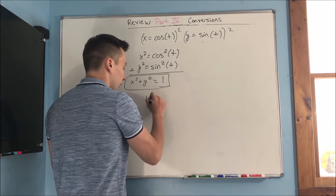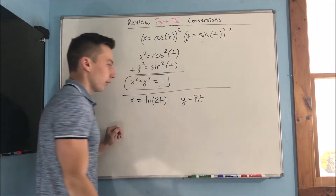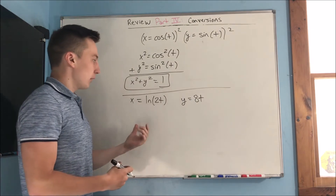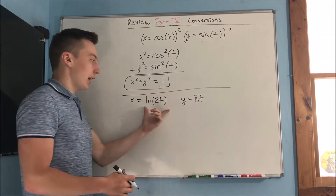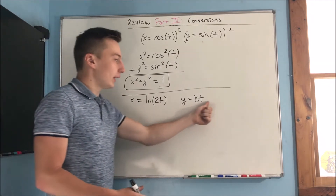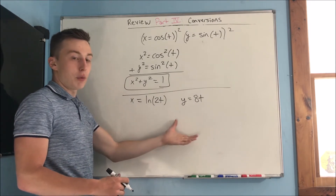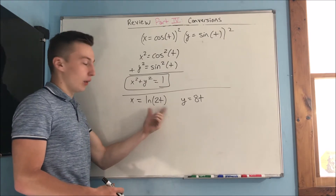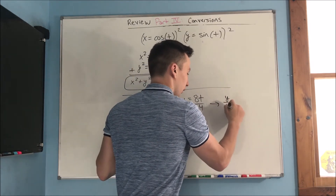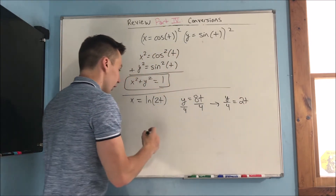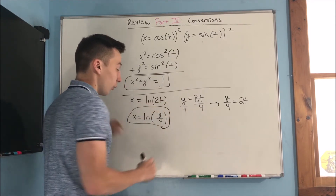Our next problem: x equals natural log of 2t, and y equals 8t — eliminate the parameter. Don't worry about the natural log yet. We have a 2t inside that natural log and 8t here. If we divide y by 4 on each side, we get y over 4 equals 2t. Now we have something to plug back in: x equals the natural log of y over 4. We have eliminated our parameter.